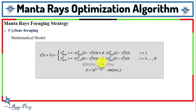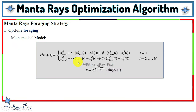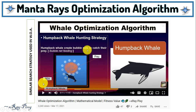This is the mathematical model for the cyclone foraging strategy. Each individual moves toward the one in front of it and toward the food in a spiral way — using both the best position and the individual position. A similar spiral search strategy is also used in the Whale Optimization Algorithm, specifically the bubble net feeding behavior of the humpback whale.